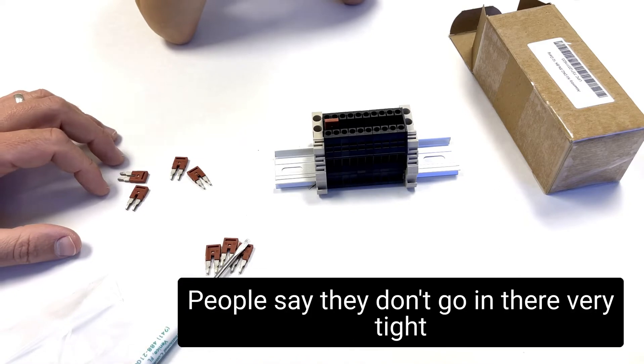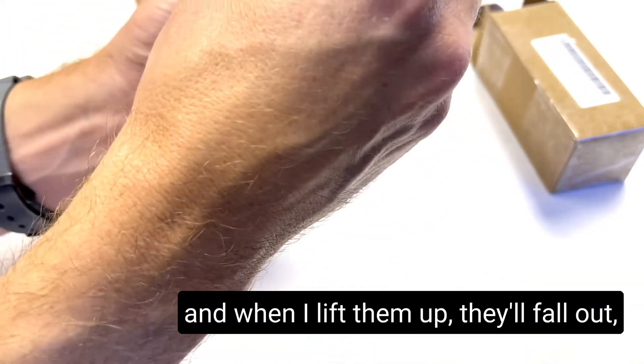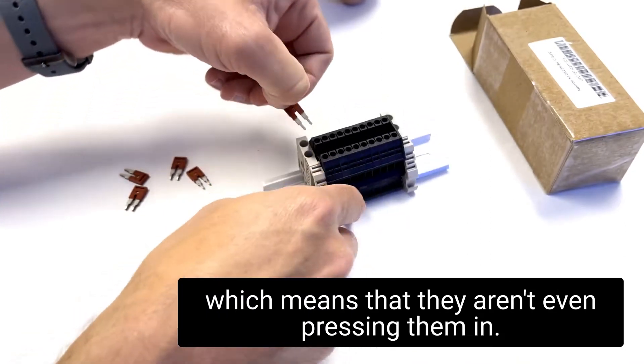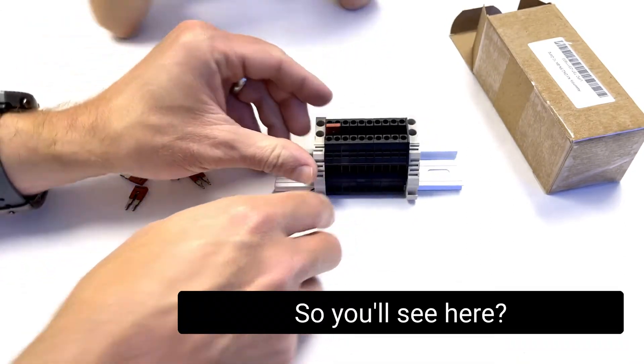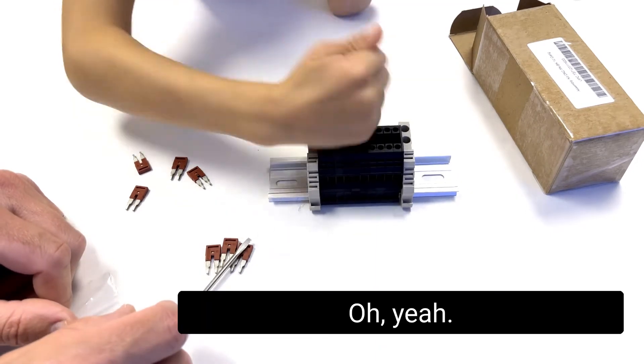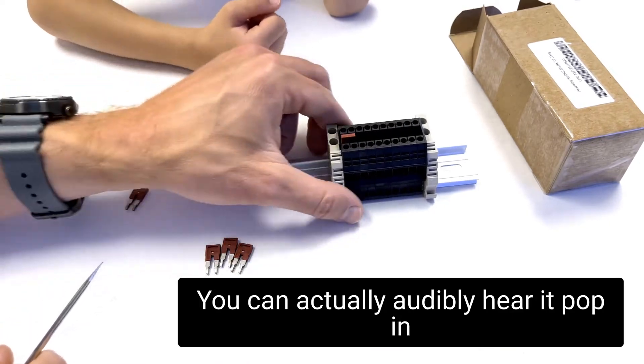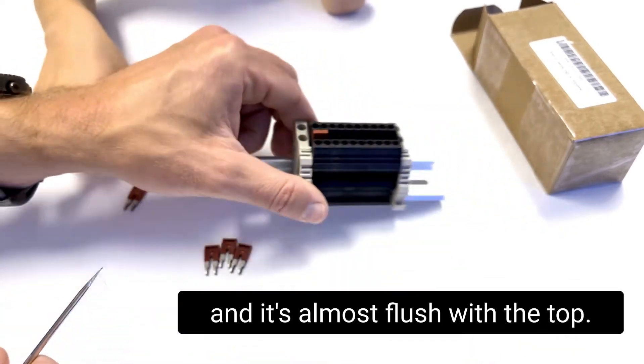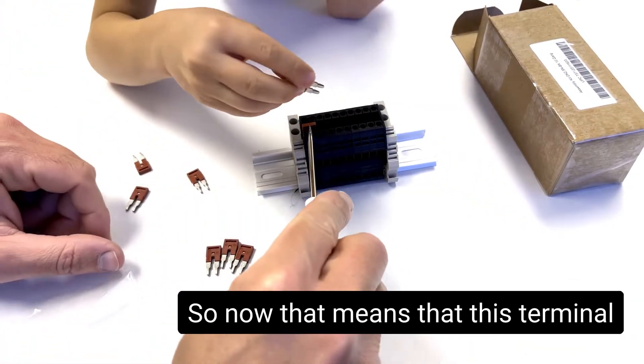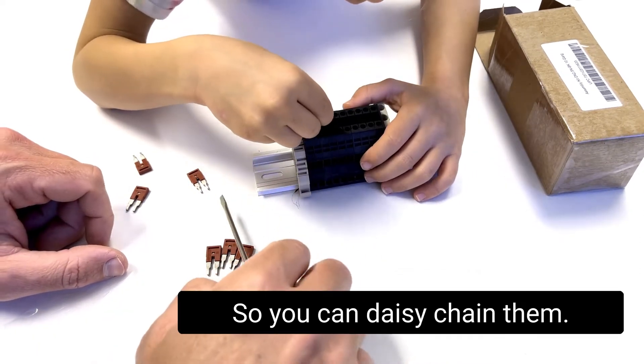And then the jumpers go on the top. Now, June, every once in a while I get a question. People say they don't go in there very tight. And when I lift them up, they'll fall out, which means that they aren't even pressing them in. So you'll see here, go ahead and see if you can give that a push. Oh, yeah. Hey, you did a pretty good job, actually. I'm going to push it down with that screwdriver head. You can actually audibly hear it pop in and it's almost flush with the top. So now that means that this terminal block and this terminal block are connected. So you can daisy chain them.